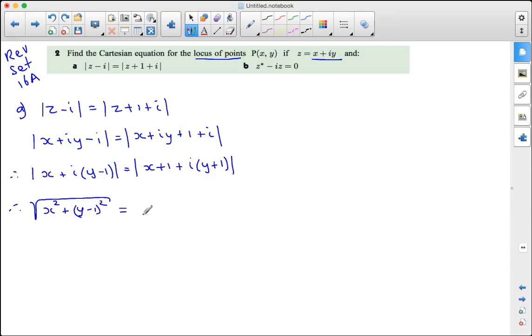The right hand side we have the real part, so that's (x + 1) squared, and the imaginary part, (y + 1) squared, the root of all that. So we're finding the modulus.